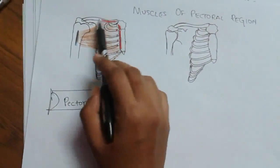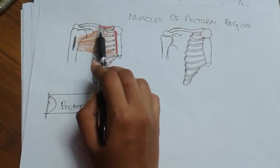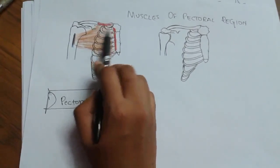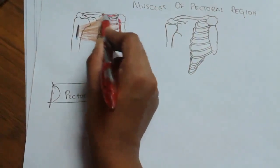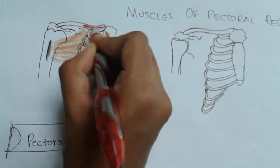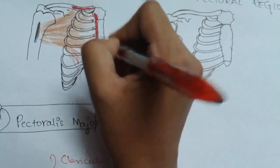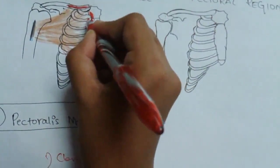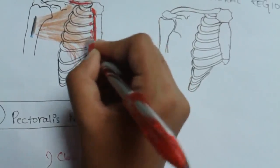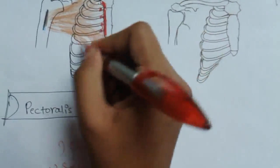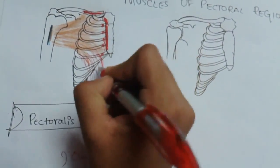The origin of pectoralis major is from the anterior aspect of the medial two-thirds of the clavicle, the lateral border of the sternum, from the 2nd to 6th costal cartilages, and from the aponeurosis of the external oblique muscle. All these are the origins.